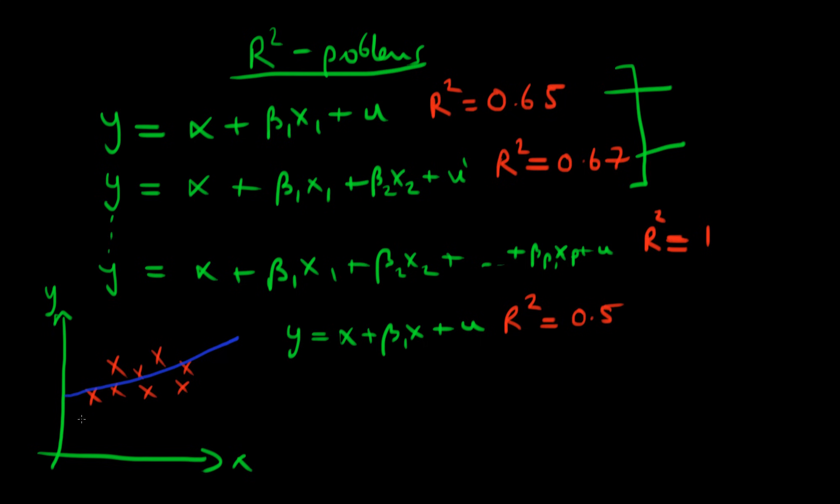So then perhaps rather than just including X, we also include the square of X. So now our model looks something like that. And perhaps you could argue that our new model with the X squared term is fitting the data slightly better than my original model. And the R squared will almost certainly show this. So the R squared might be, let's say, 0.6.